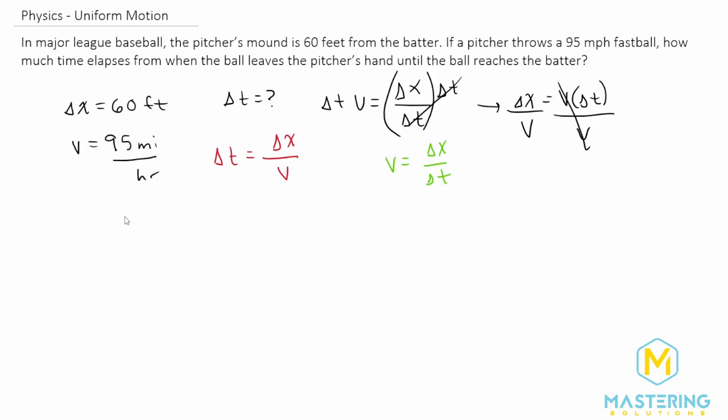So now before we plug in the numbers, we need to make sure all the units agree. Because we have 60 feet for the pitcher's mound distance, and then we have 95 miles per hour. So the feet and the miles don't agree and we have to change one of them. It doesn't really matter which one you do.